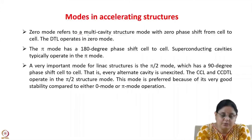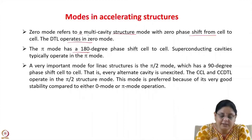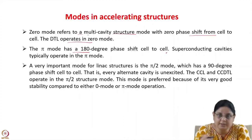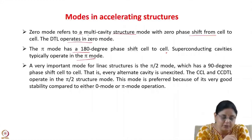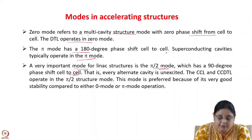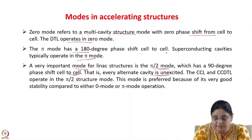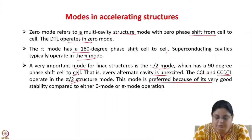At the cost of some extra complexity, the side-coupled structure yields the good efficiency of a π mode structure and insensitivity to fabrication errors of the π/2 mode. The zero mode refers to a multi-cavity structure mode with zero phase shift from cell to cell — DTL operates in the zero mode. The π mode has a 180-degree phase shift cell to cell — superconducting cavities such as 5-cell or 9-cell elliptical cavities typically operate in the π mode. The π/2 mode has a 90-degree phase shift cell to cell; CCL and CCDTL operate in this mode, preferred for its good stability.